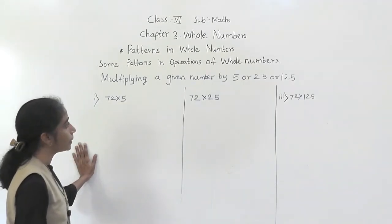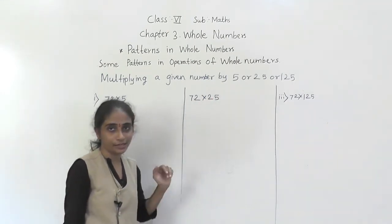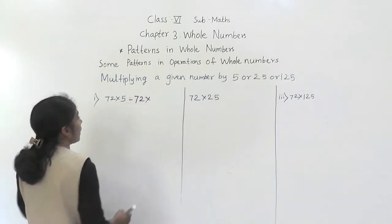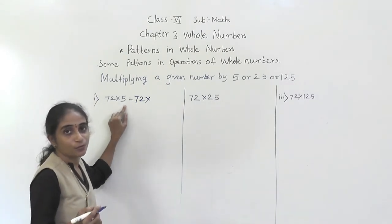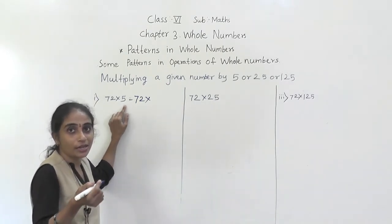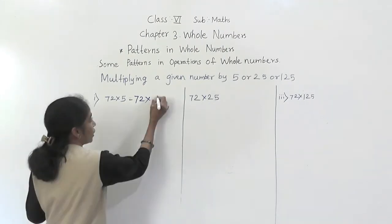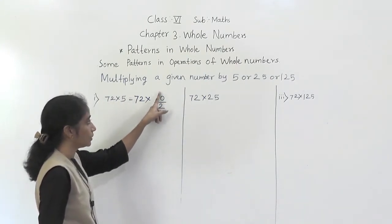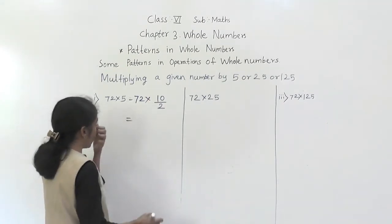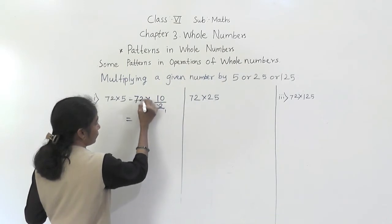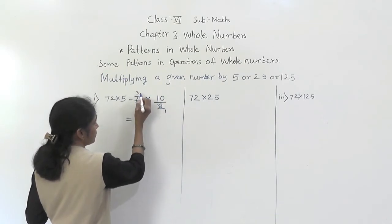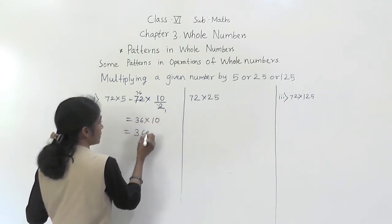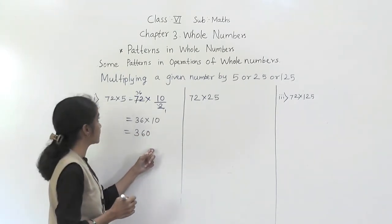Let's learn multiplying a number by 5, 25, or 125. For multiplying by 5: since 5 = 10 ÷ 2, we can multiply the number by 10 and then divide by 2. For example, 72 × 5: divide 72 by 2 to get 36, then multiply by 10 to get 360.